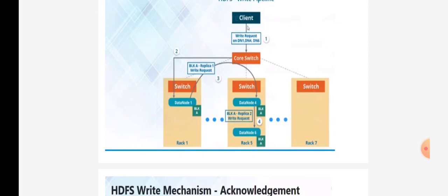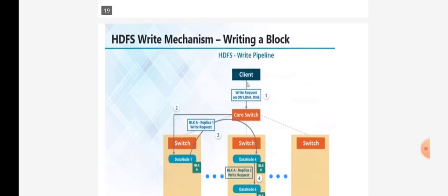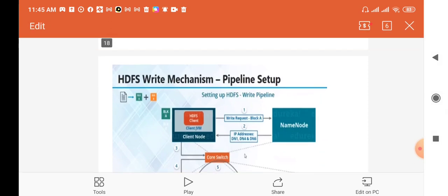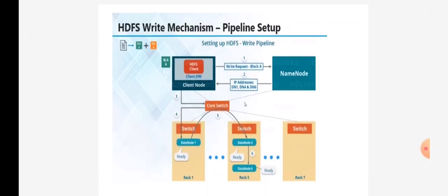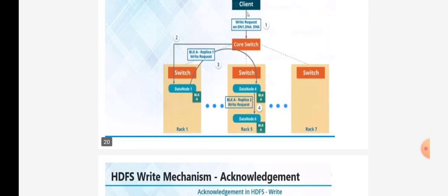This is how the writing mechanism is completed in the HDFS file system. To summarize: the client takes a block, asks the name node where to store it, and the name node provides IP addresses of the data nodes. The client then checks with DN1, DN4, and DN6 whether they are in a ready state. If they are ready, it transmits the data serially through the pipeline.